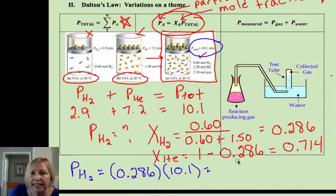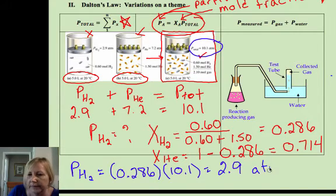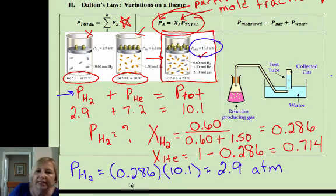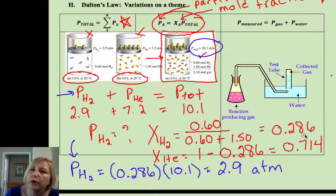That was given in that little segment of the picture as 10.1. And if we did this, indeed we should get 2.9 atmospheres. So that shows going forward when you add them together and then backwards how to get each individual partial pressure.